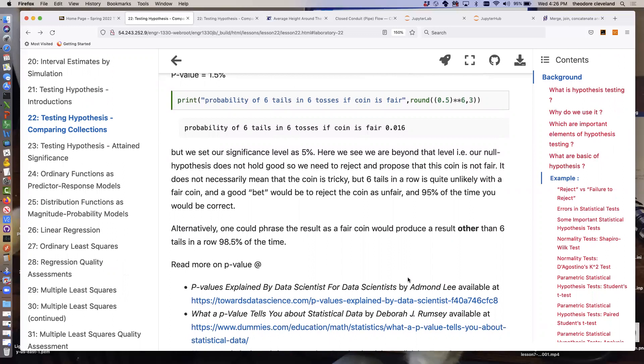We're beyond that arbitrary significance level. We don't have enough evidence that the coin is fair, so we reject the null hypothesis that it's a fair coin. Alternatively, we could rephrase that whole experiment. A fair coin, a truly fair coin, would produce a result, any result, other than six tails in a row, 98.5% of the time. That's a pretty good indication that if we get six tails in a row, that that coin is likely to be unfair.